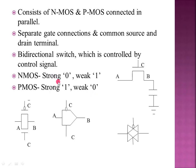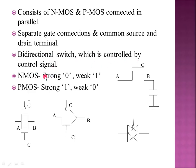If we combine these, we overcome the disadvantage: NMOS is strong 0 and PMOS is strong 1. By connecting PMOS and NMOS in parallel, we get both strong 0 and strong 1. This is the transmission gate symbol. The advantage is NMOS gives strong 0 and PMOS gives strong 1, and together they act as a bi-directional switch controlled by the control signal.